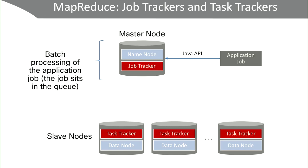On the master node we have a new function — a new daemon called the job tracker. On the slave nodes we have a new one called the task tracker. When an application job needs to communicate and analyze a data set sitting on the slave nodes below, it executes a Java command on the API, communicating with the name node and then down to the task trackers. One of the big differences between big data architectures and traditional data processing is that we don't try to bring all the data to one place and analyze it — instead, we send the processing job down to the data and distribute it.